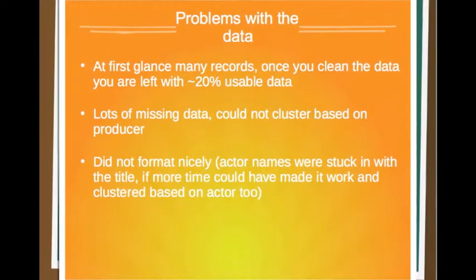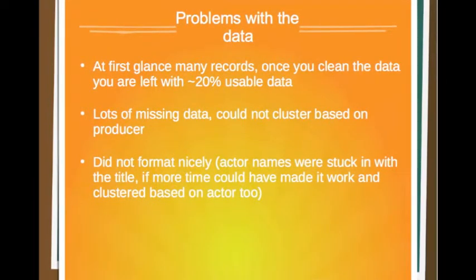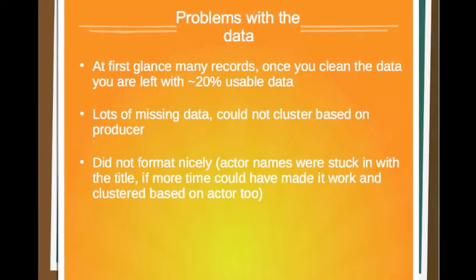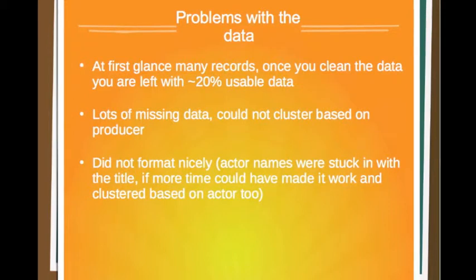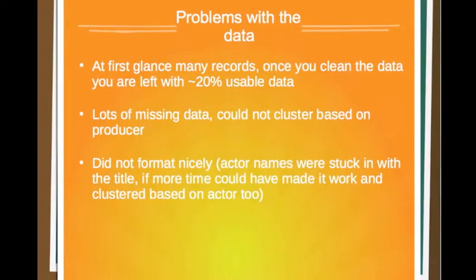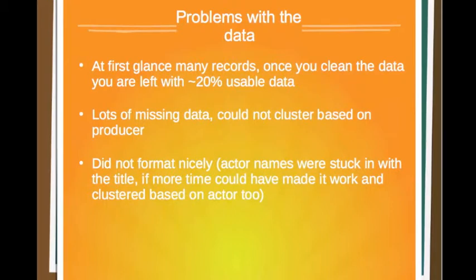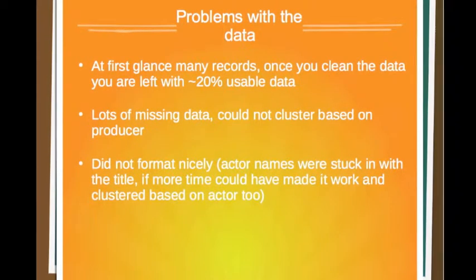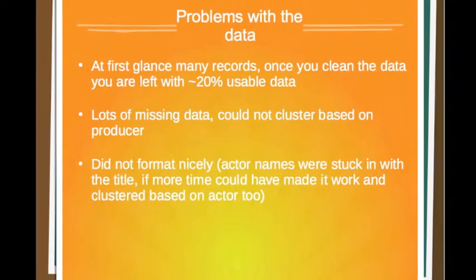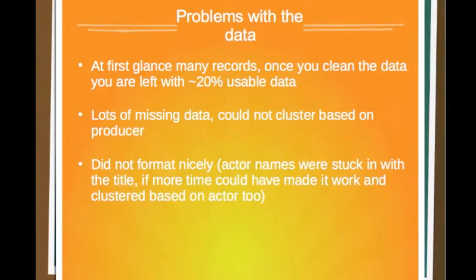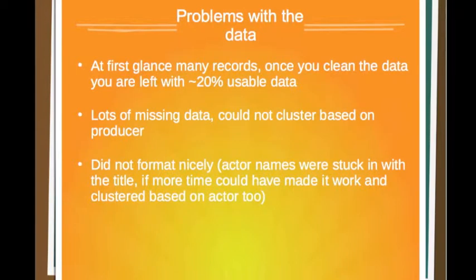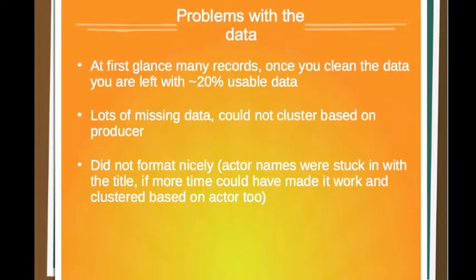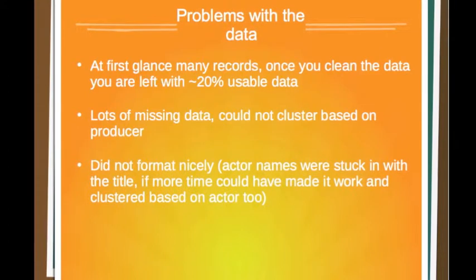There were some problems with the data. At first it looked like a nice amount of data to work with, but once you get rid of the records you can't use, it's only about 20% of the total data I could actually use. There was lots of missing data, like missing release dates, which I had to remove, and it didn't format nicely. When I exported the CSV from the Java file, actor names were kind of stuck in with the title, so I couldn't really do much with that unless I had more time — then I could actually cluster based on actor names too.